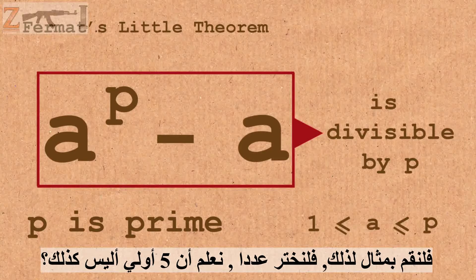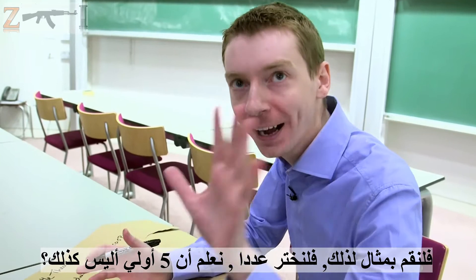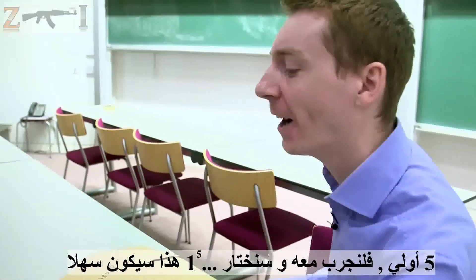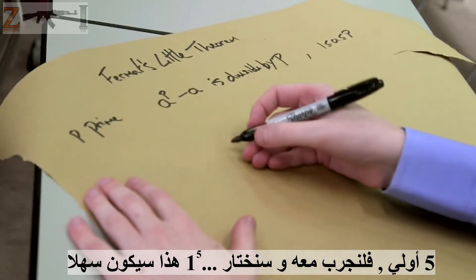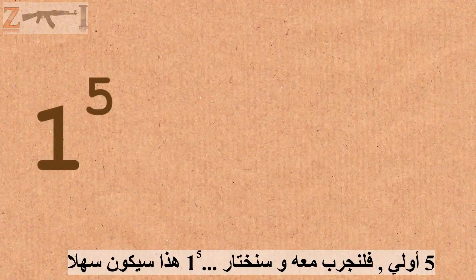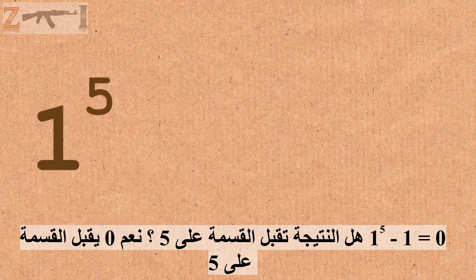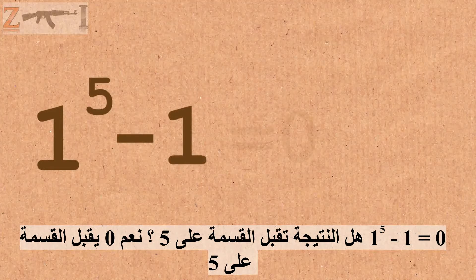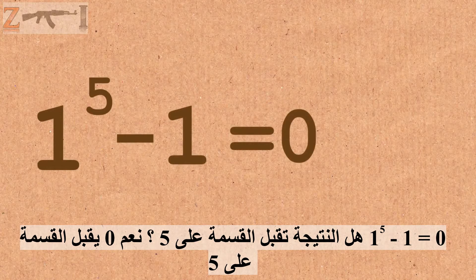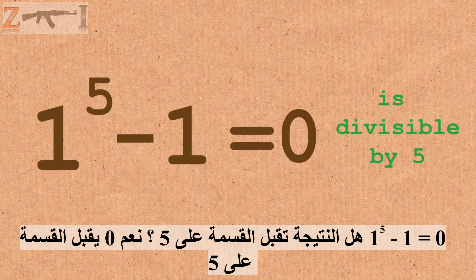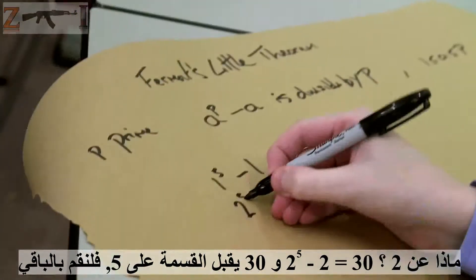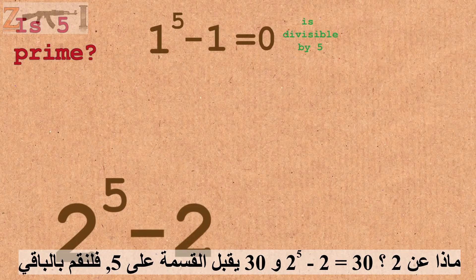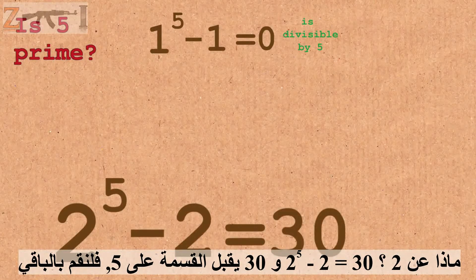Let's do an example. We know 5 is a prime. So let's use that. 1 to the power of 5 minus 1 equals 0 — is that divisible by 5? Yes, we say 0 is divisible by 5. What about 2? 2 to the power of 5 minus 2 gives you 30, and that's divisible by 5 as well.